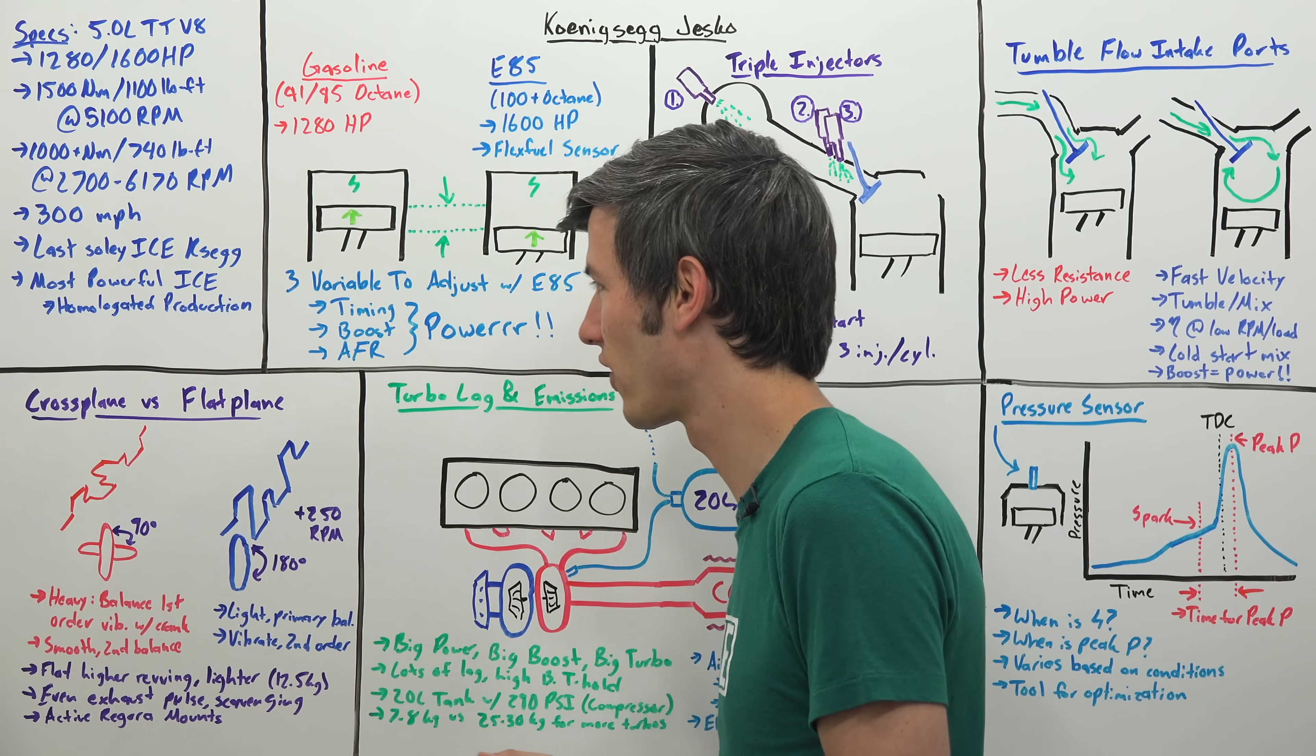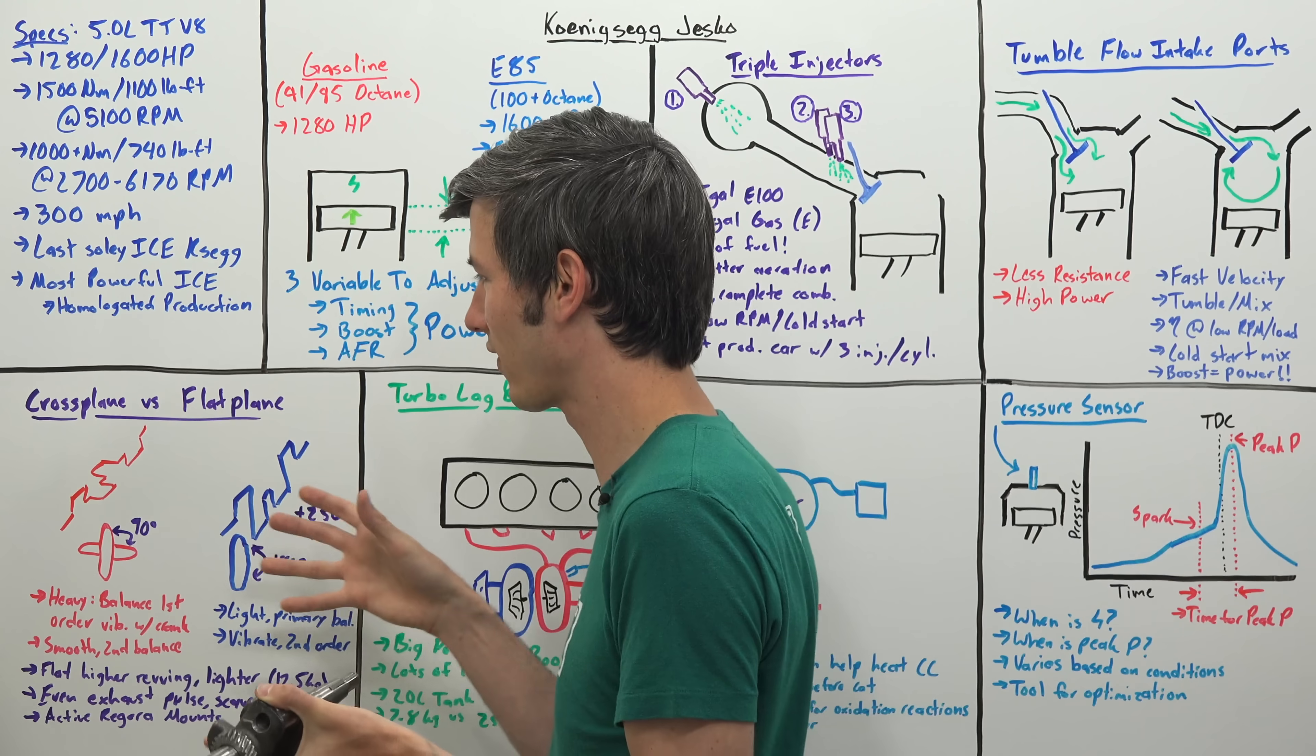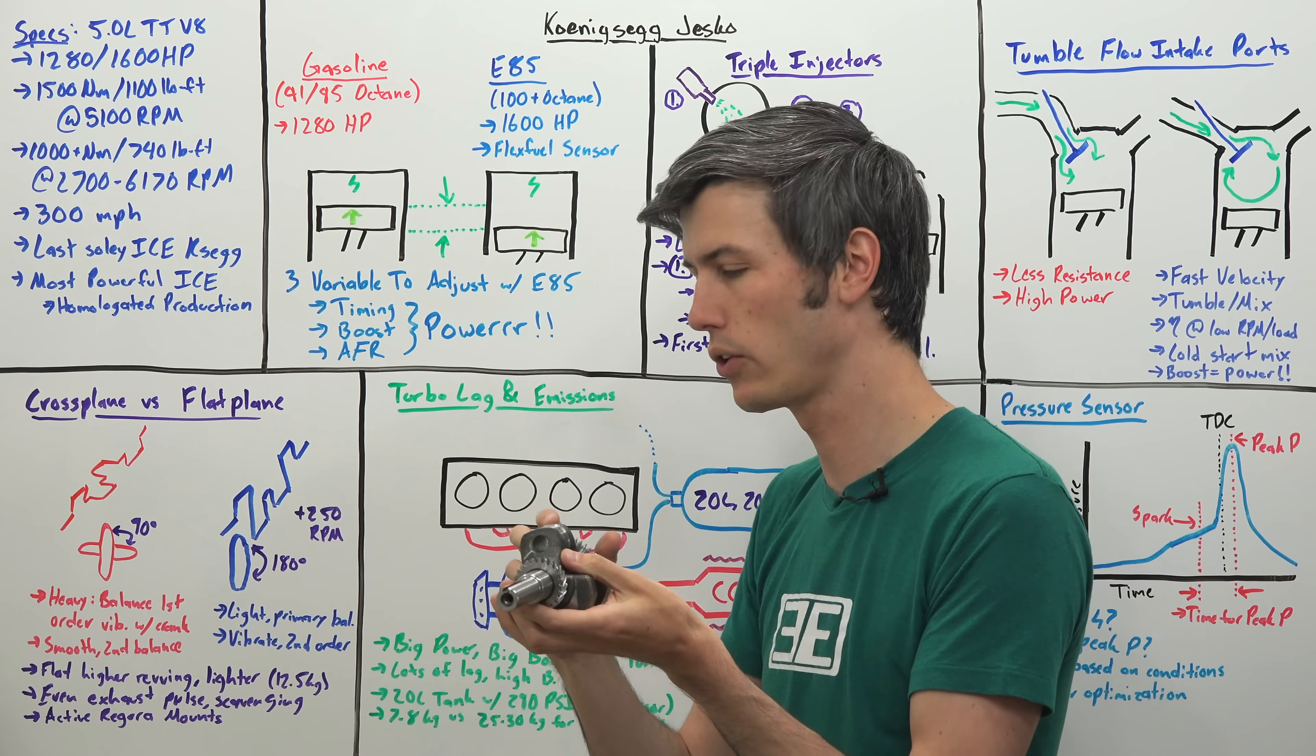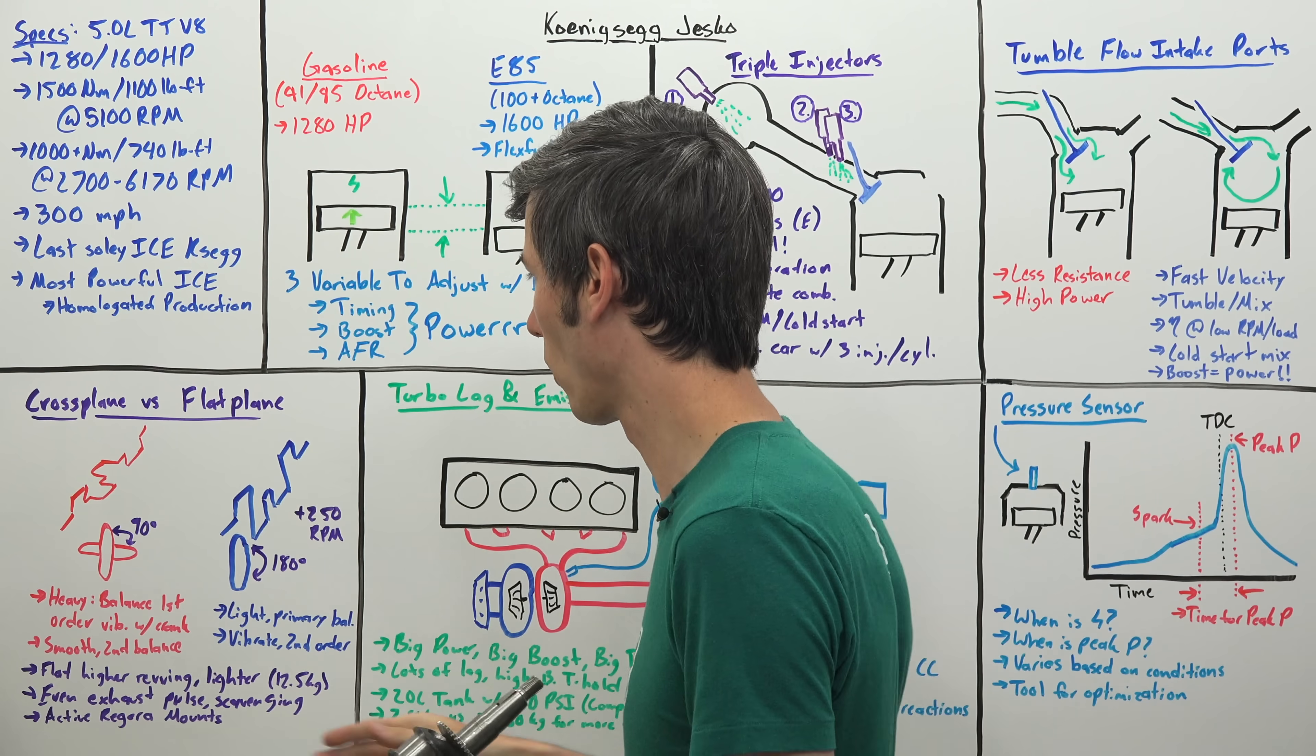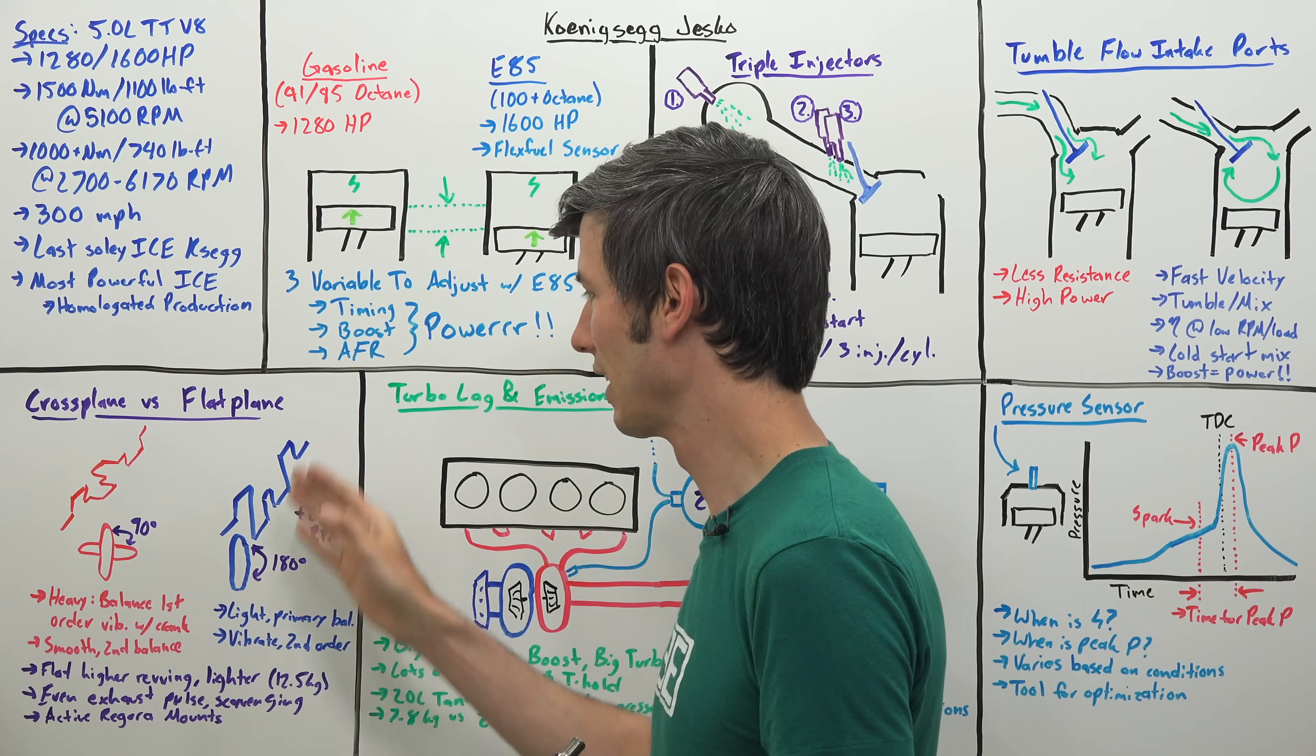A fascinating change with this engine is that they've switched from a cross plane crankshaft in the Agera over to a flat plane crankshaft here in the Jesko. A cross plane crankshaft meaning your crank pins are 90 degrees apart. With four separate crank pins, one crank pin for every two cylinders, you'll have one, it rotates 90 degrees, you'll have another after rotating 90 degrees, another after rotating 90 degrees, and then you've got your four there. With a flat plane crankshaft you rotate those crank pins. Instead of 90 degrees like with the cross plane, it is 180 degrees.